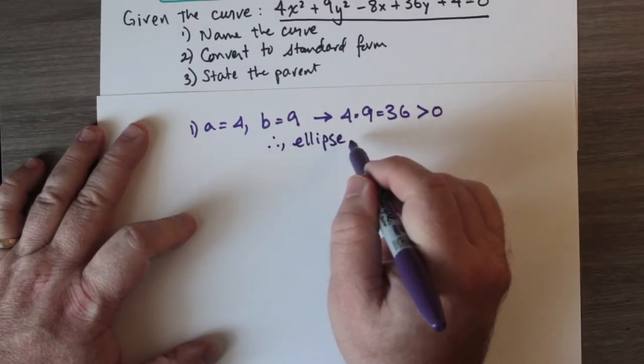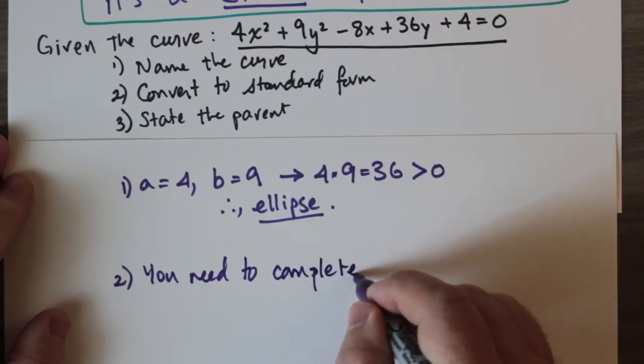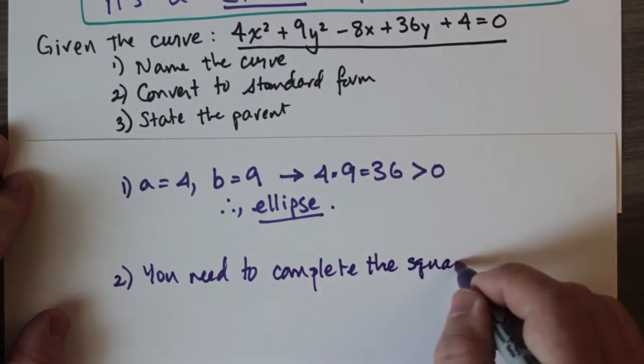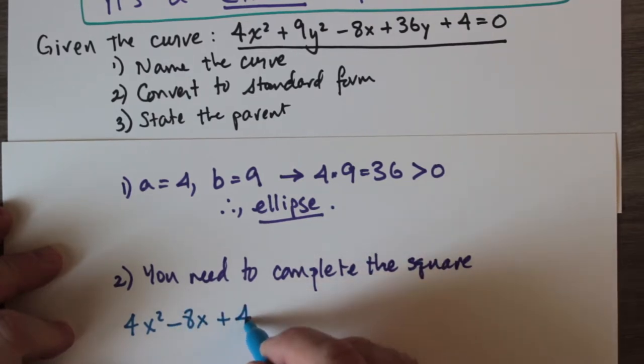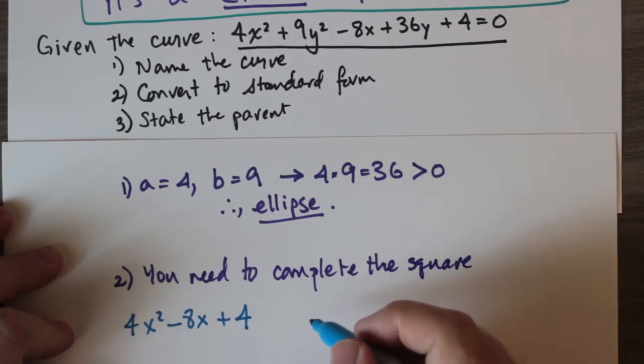Now in order to convert to standard form you have to complete the square, but it's a little bit more than that because there's actually two squares to complete. There's a square in terms of y and another square in terms of x, so both of those have to be completed separately.